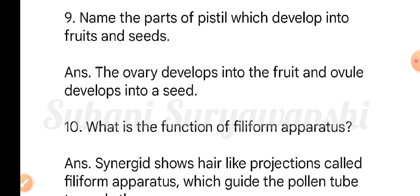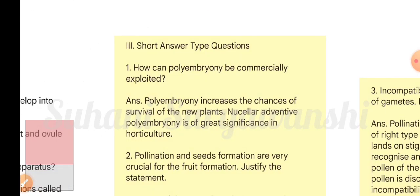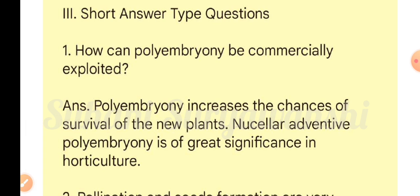Question nine: name the parts of pistil which develop into fruits and seeds. The ovary develops into the fruit and the ovule develops into a seed. Question ten: what is the function of the filiform apparatus? Synergids possess a filiform apparatus — hair-like projections called the filiform apparatus — which guide the pollen tube towards the egg.